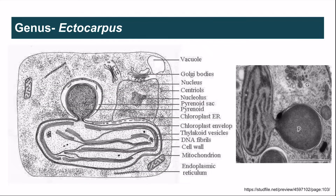The cells are typically eukaryotic, containing the nucleus and all eukaryotic organelles. The chromatophore is characteristic since it has two membranes of chloroplast endoplasmic reticulum in addition to the chloroplast envelope. It also contains a stalked pyrenoid; the pyrenoid has a pyrenoid sac which contains the reserved food material, and the thylakoids are present in groups of three.